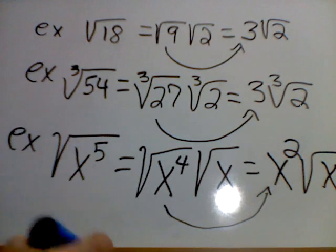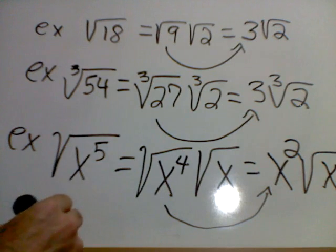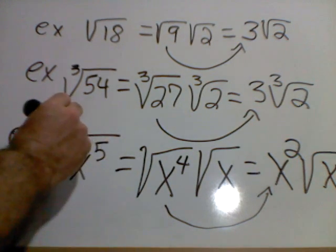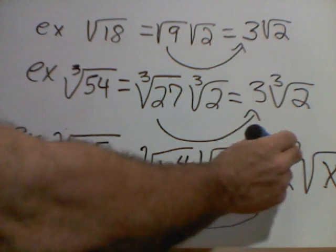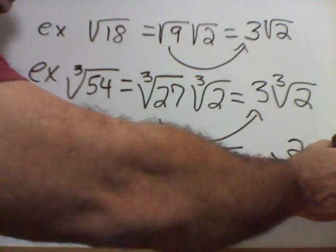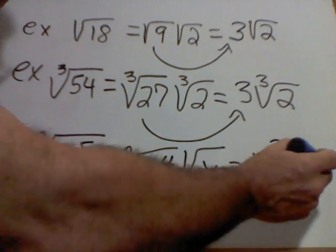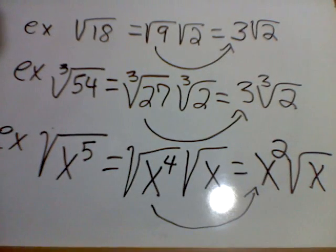So can I divide these exponents on the variable? Yes. Watch this. 2 goes into 5, 2 times with a remainder of 1. Remember, the exponent under the radical has an exponent of 1 when there is no number there.